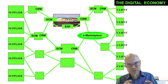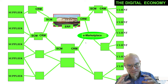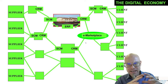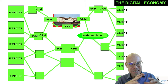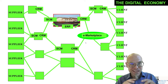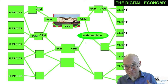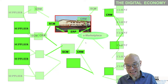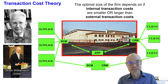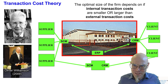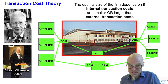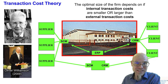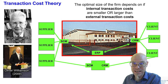This reduction of transaction costs, thanks to the death of distance and the timeless time, reorganizes the entire economy to a degree. There's a very famous theory that explains that, and — surprise, surprise — it's called the transaction cost theory. It's one of the few, or maybe the only, theories that received two Nobel Prizes: Coase in 1991 and Williamson in 2009.